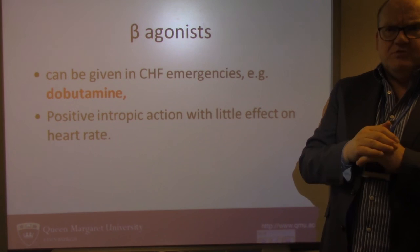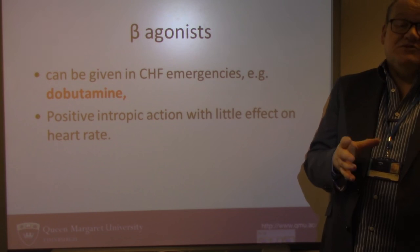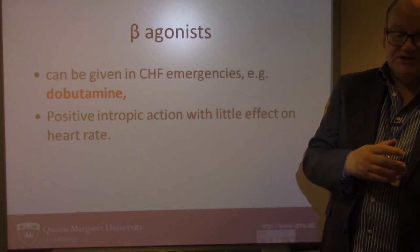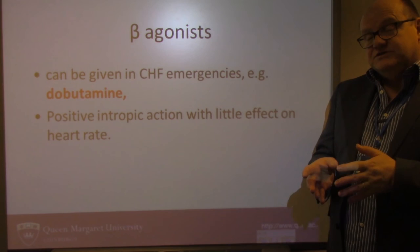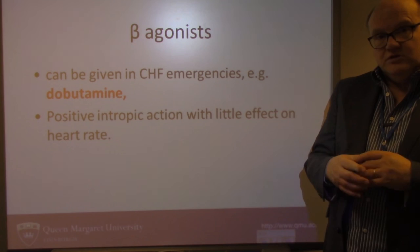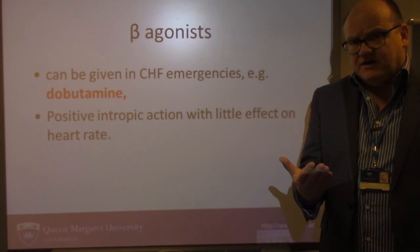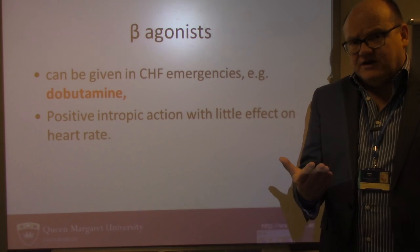To summarise: when blood pressure is high, several groups of drugs interact with mechanisms in the renal system — renin inhibitors, aldosterone blockers, ACE inhibitors — and others work on the heart directly, such as beta blockers reducing cardiac workload, or vasodilators opening blood vessels. The second part covered heart failure, where you want to drive the heart because it's not working properly — that's when we use phosphodiesterase inhibitors and beta agonists as drivers of the heart. Thank you.